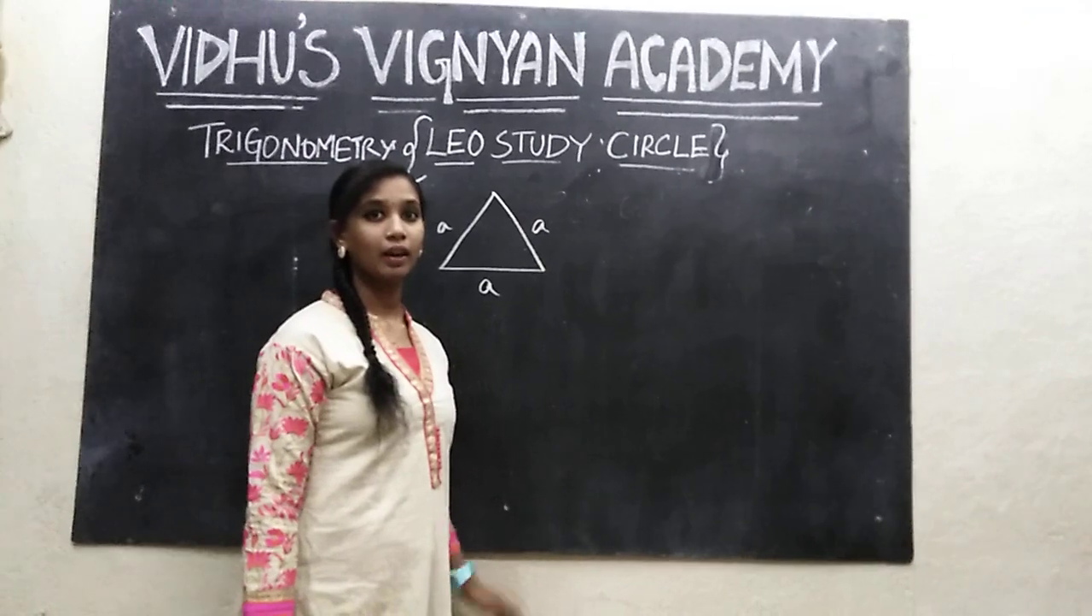So till here I will be ending the angles section. Now I will show how these values are derived. Let me introduce the equilateral triangle. As the name suggests, the triangle has equal sides - all 3 sides are equal. I'm denoting the side by A. According to the angle property, the sum of 3 angles in a triangle gives 180°, so each angle is 60 degrees.